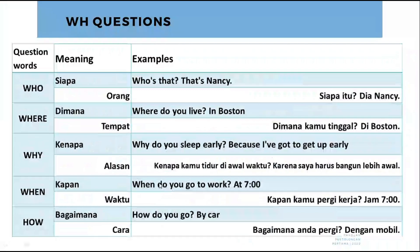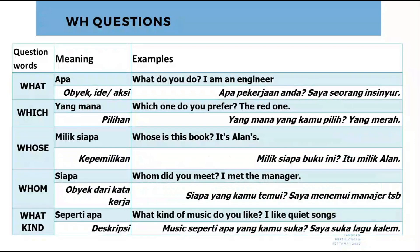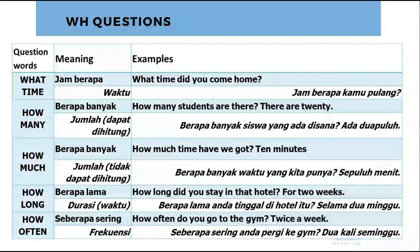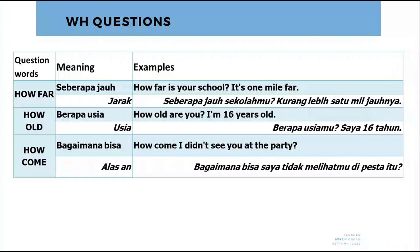Jadi kita sudah mempelajari, ternyata WH question itu gak hanya 5W1H. Tapi banyak: ada who, where, why, when, how, what, which, whose, whom, what kind, what time, how many, how much, how long, how often, how far, how old, and how come.